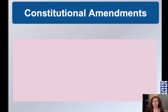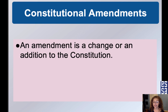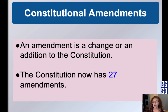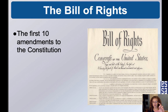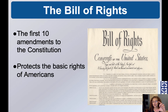Going back to the Constitution — the framers knew that laws can change as a country grows, so they allowed for changes or additions, though they didn't make it easy. An amendment is a change or addition to the Constitution. Right now the Constitution has 27 amendments. The first 10 of those 27 amendments are called the Bill of Rights, and they protect the basic rights of Americans.